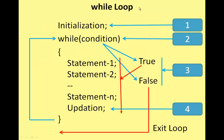While loop syntax: while condition — code to be executed. If the condition is true, the code executes. If false, it does not. The while loop includes initialization, then the condition is checked. If true, the code runs and the condition changes. If false, the loop exits.